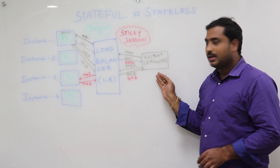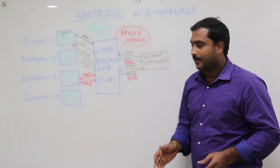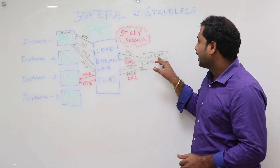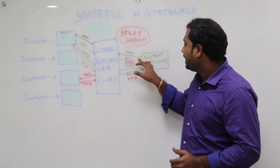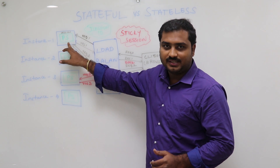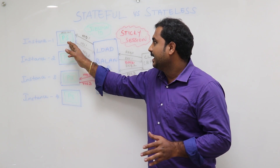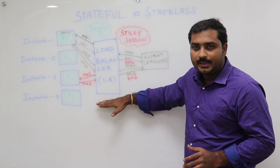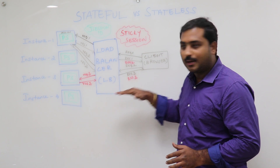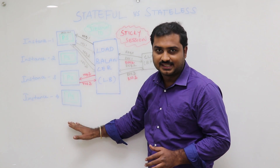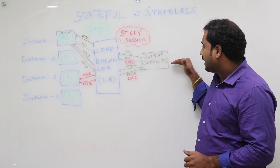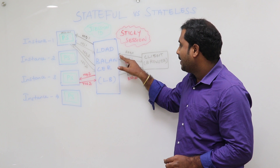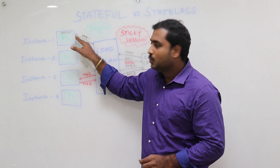The client — the user agent, the browser — wants to access the application called product service. The browser sends a request to access the product service APIs. There is a load balancer sitting between the instances and the client, because the load balancer knows the IPs of all instances. The client sends Request 1 to the load balancer, which forwards it to Instance 1.